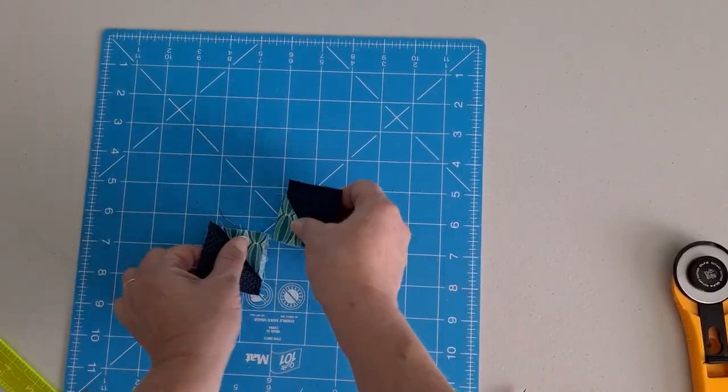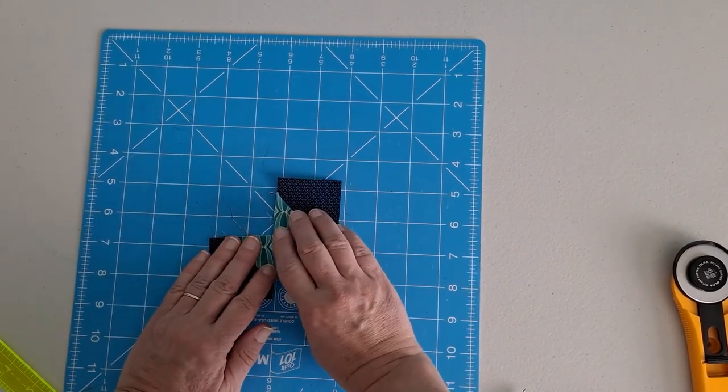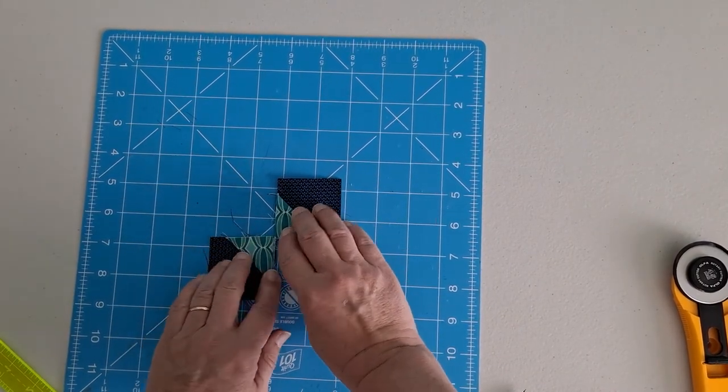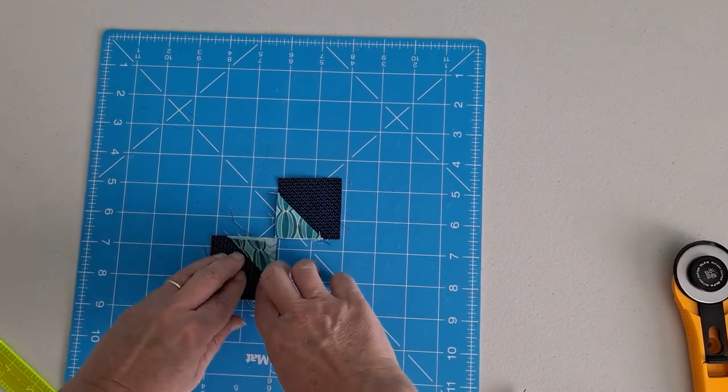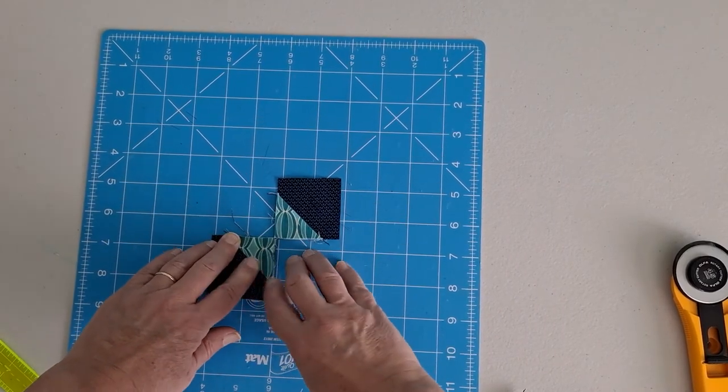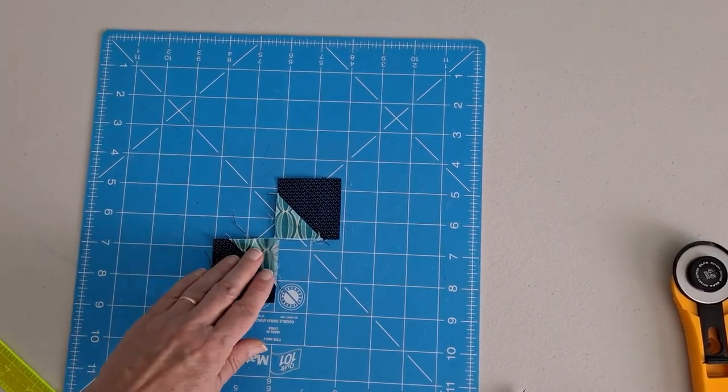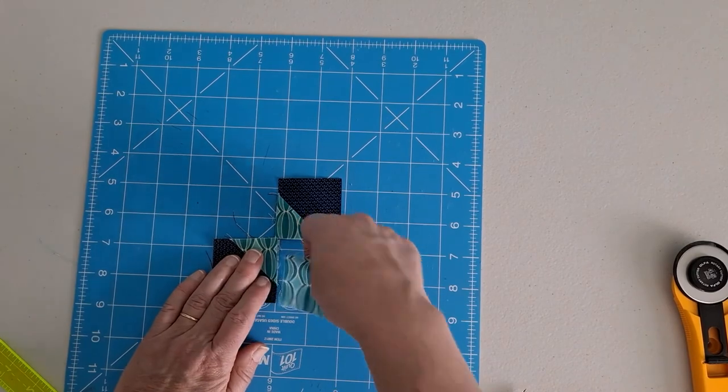And you're going to do that with both of the one and a half inch squares and the two inch squares of background. See, I haven't trimmed my seam allowance here, and we're going to take our other two inch squares.